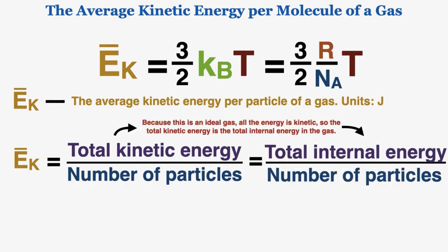Because this is an ideal gas, all the energy is kinetic, so the total kinetic energy equals the total internal energy of the gas. Sometimes IB questions ask you to calculate the total internal energy in an ideal gas, and they always mean the total kinetic energy, because in an ideal gas all the energy exists as kinetic energy.